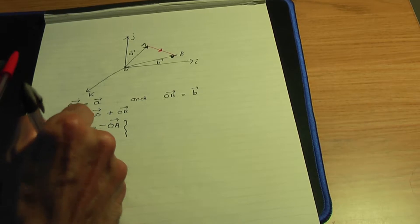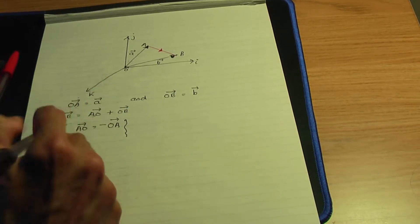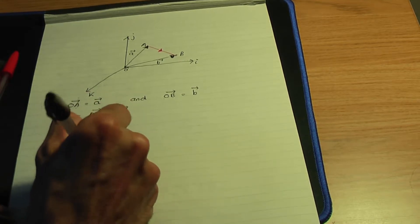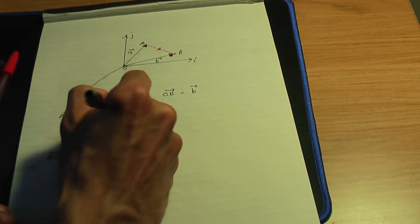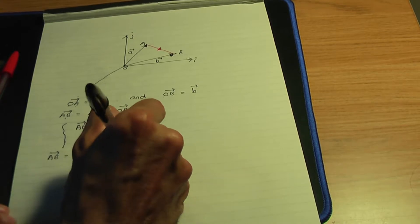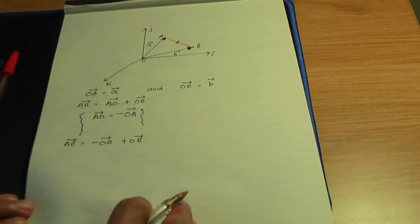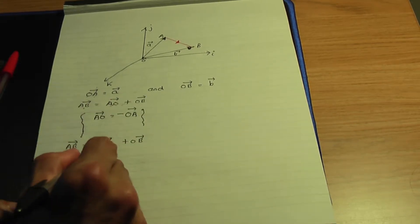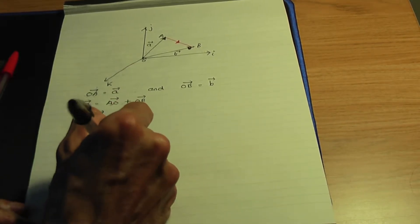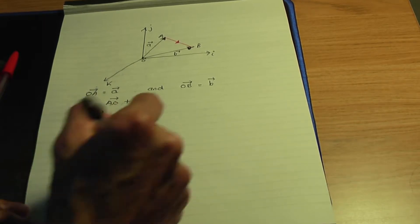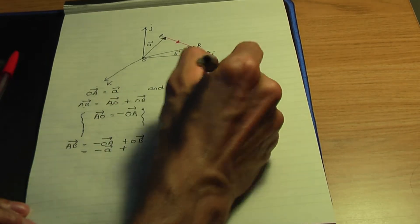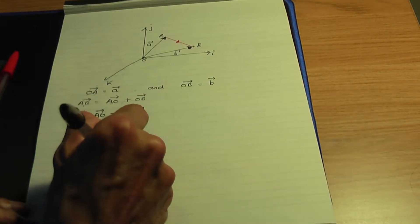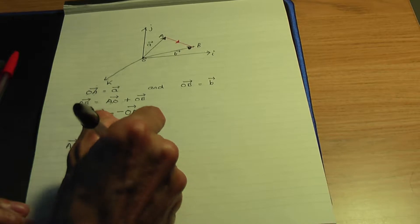In this case, I could rewrite this as AO, which is minus OA, plus the vector OB. The vector OA is given by small a, plus the vector OB given by small b, which is the same as writing the vector b minus the vector a.